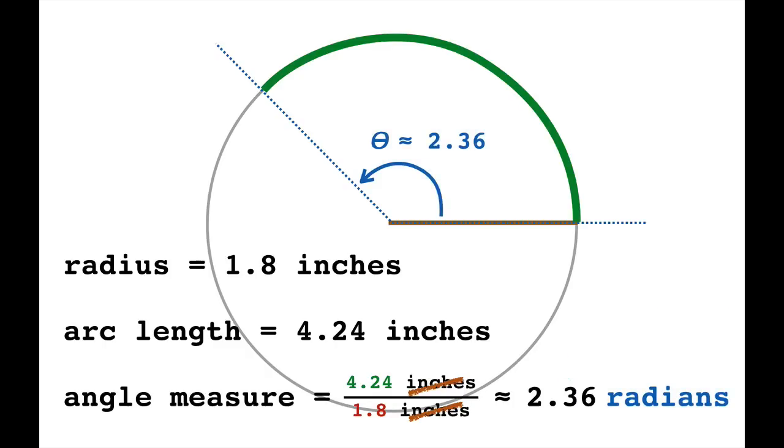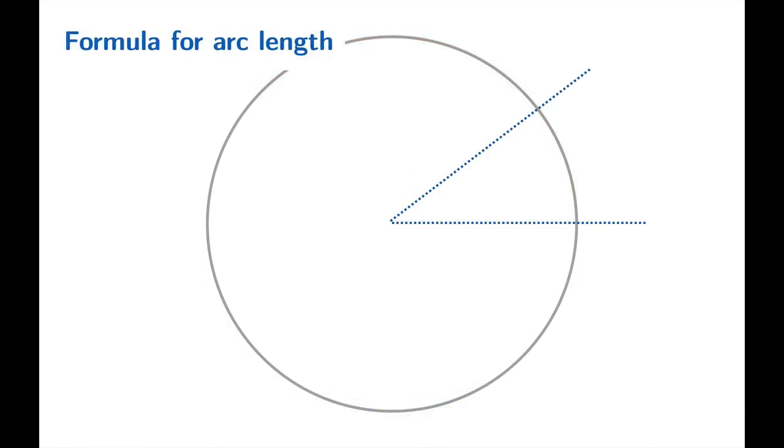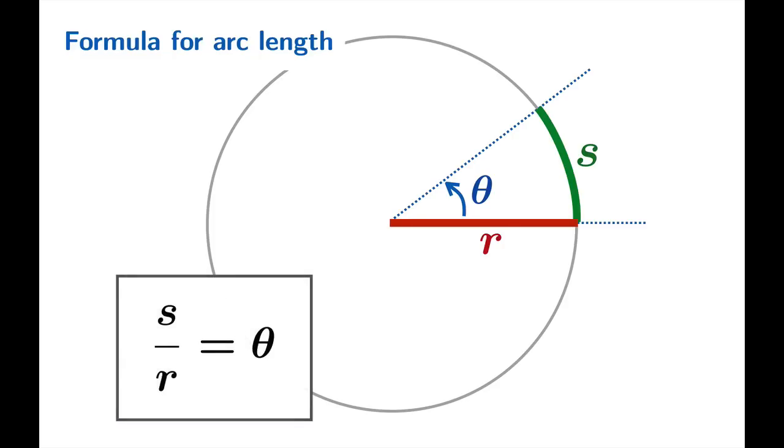It turns out radians are a very natural unit to use if you want to talk about arc length. Suppose this angle is θ radians, the radius is r, and this arc length is s. The very definition of radians tells us that s divided by r is θ. This is exactly the content of the example we just looked at. Put another way, the arc length is equal to r times θ. Now remember, this only works if you're measuring θ in radians.